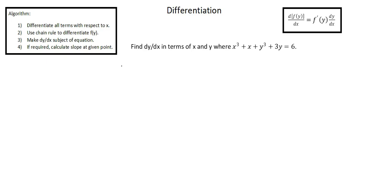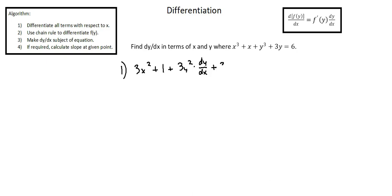Let's work through steps 1 and 2. Differentiate all terms with respect to x. Our first term, x to the power of 3, is an x function — it differentiates to 3x squared. Our next term, plus x, is also an x function and differentiates to 1. The third term is a y function, y to the power of 3, so we apply the chain rule: y to the power of 3 differentiates to 3y squared, and applying the chain rule we multiply by dy over dx. Our fourth term is also a y function: 3y differentiates to 3, and we multiply by dy over dx.